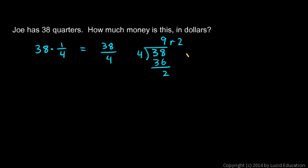And remember, that remainder of 2 means 2 fourths. So that's my answer, 9 and 2 fourths. But the 2 fourths can be simplified. This is equal to 9 and 1 half, and that's 9 and 1 half dollars.